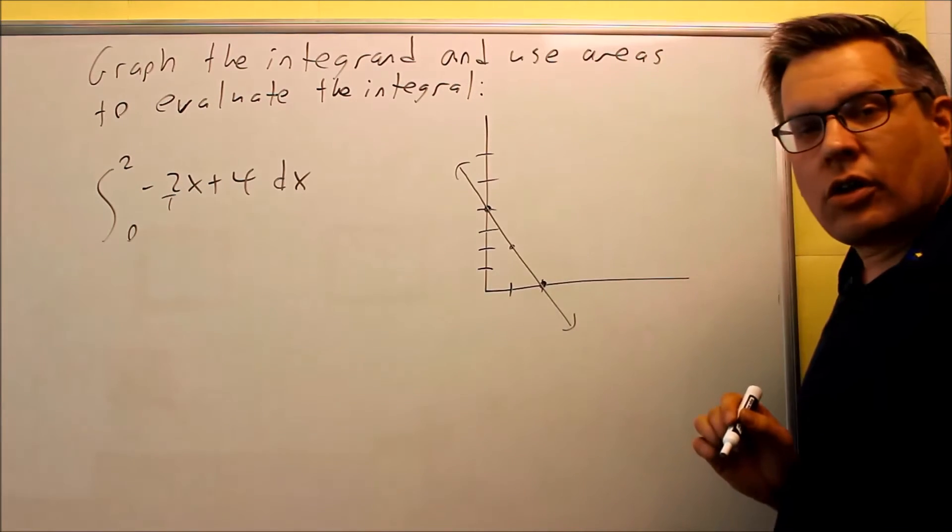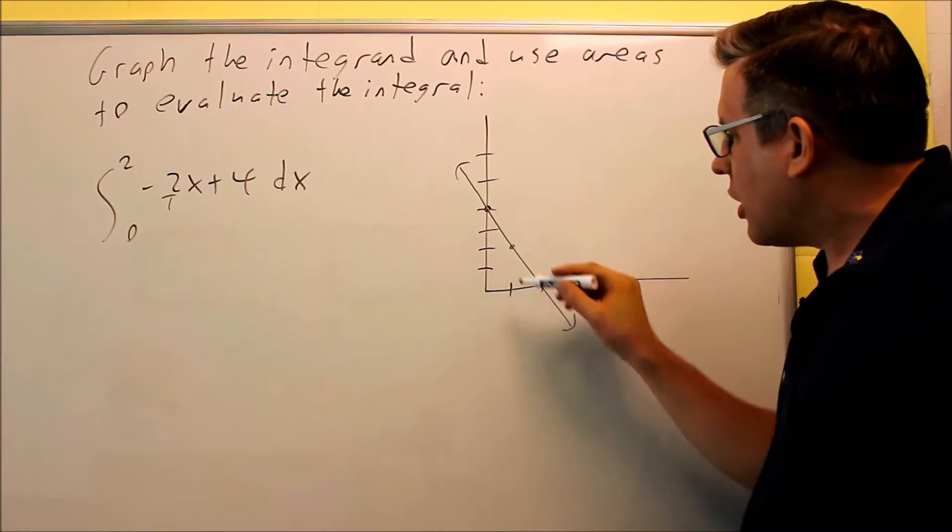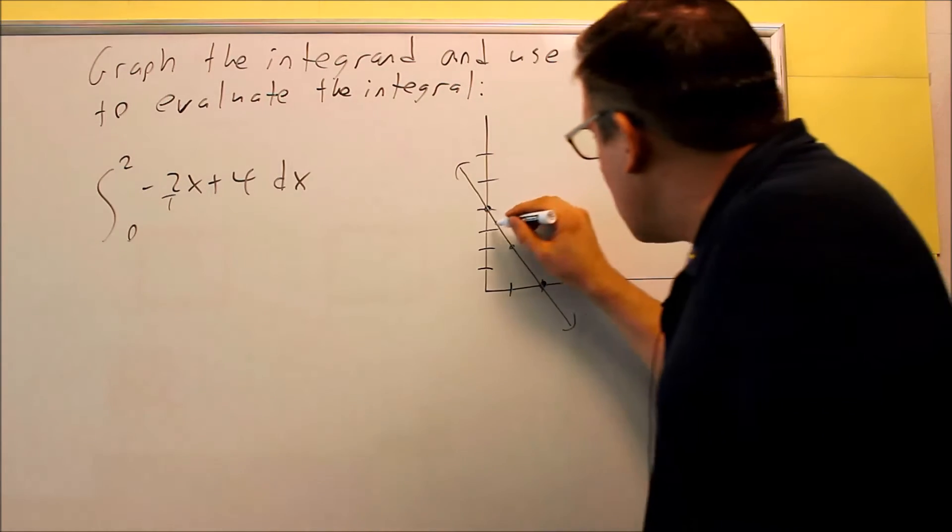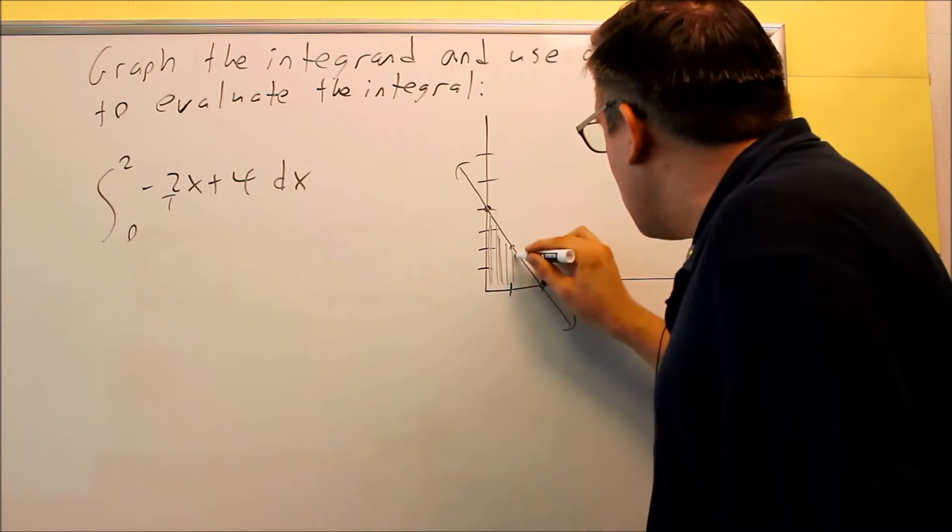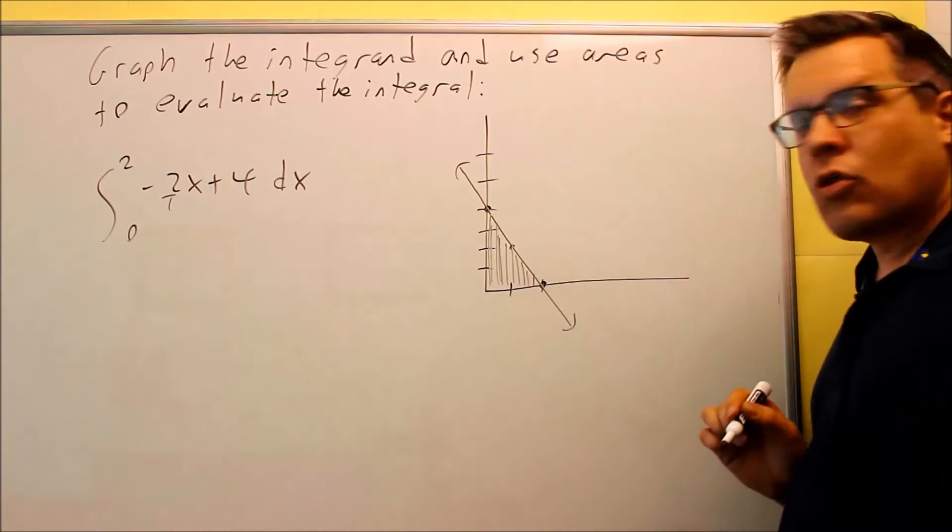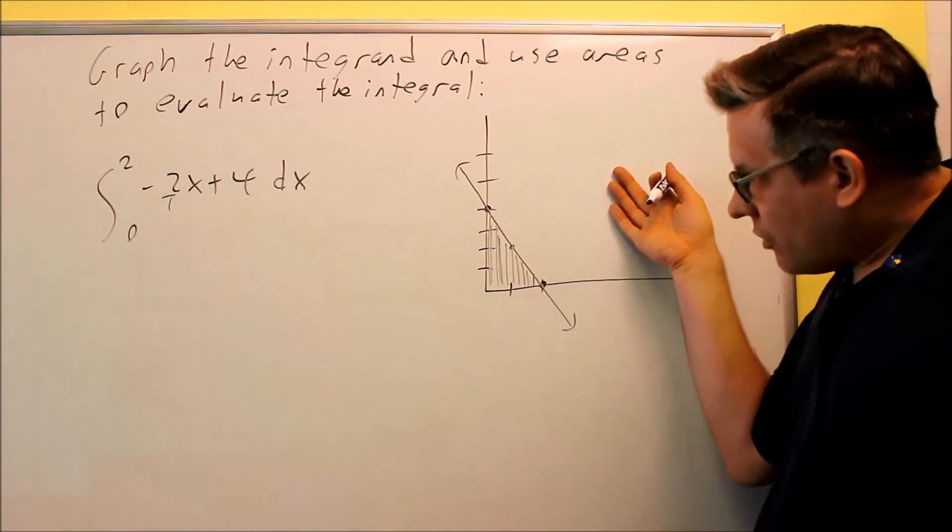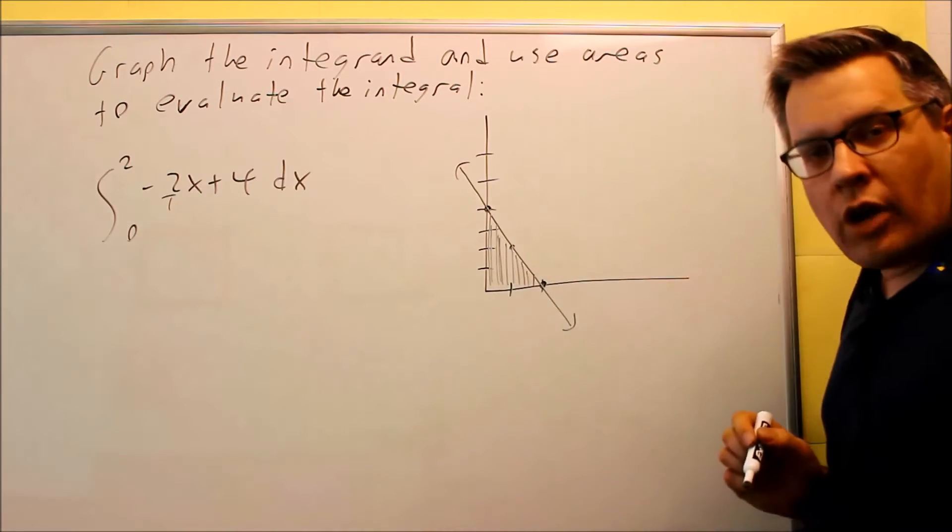Now when they ask for area under the curve, they're only assuming that you're talking about the area above the x-axis essentially. So in this case, my actual area is going to be this triangle right here. That would be the graph that would go with it. The shaded area is what we're actually going to be finding.